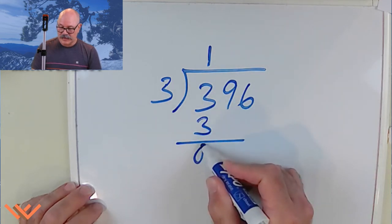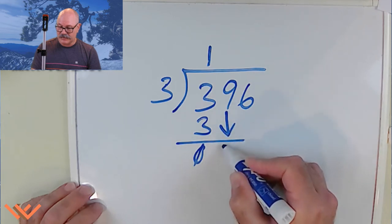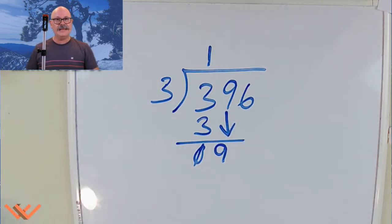And one times three is equal to three. I bring that down. I have a zero. And then, look at that. I'm going to bring down this nine. Easy peasy. That's that bring down. Okay. Repeat the process.